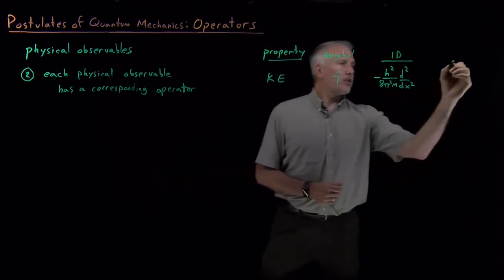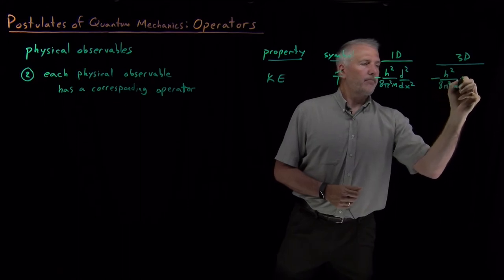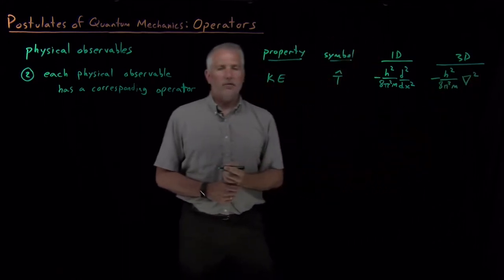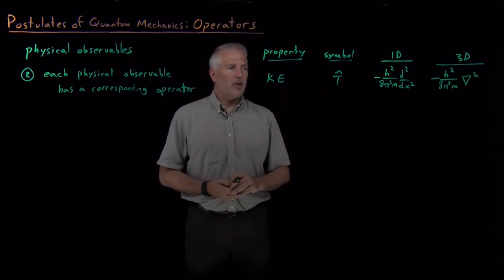If we're solving a three-dimensional problem, it's actually a little bit easier to write, perhaps harder to think about. We use del squared for the d squared dx squared plus d squared dy squared plus d squared dz squared in three dimensions. So there's an example of an operator that we've seen.